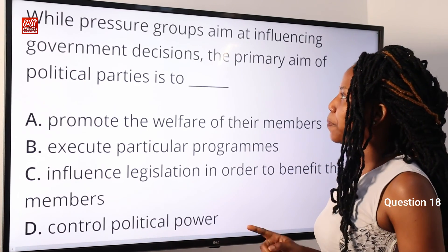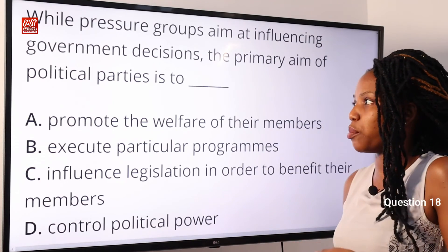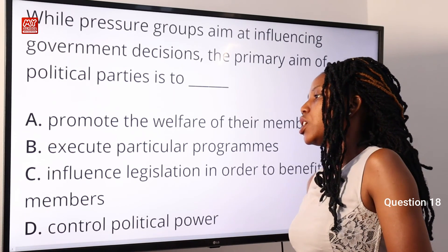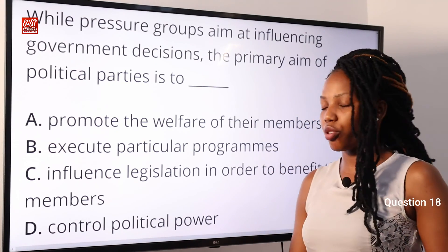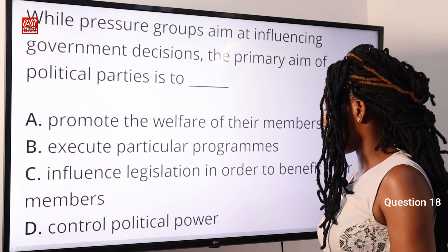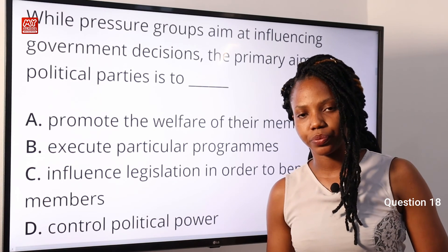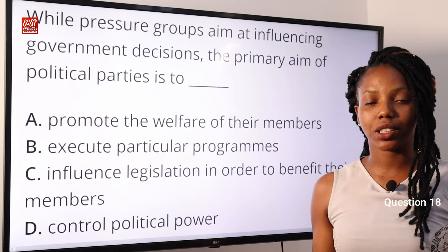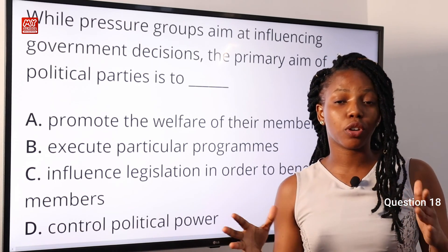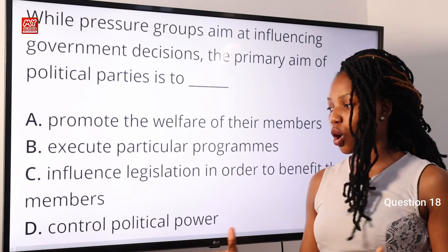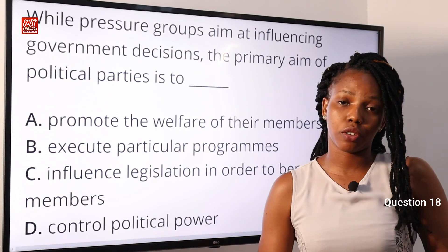Question 18: While a pressure group aims at influencing government decisions, the primary aim of political parties is to — A: promote the welfare of their members; B: execute particular programs; C: influence legislation to benefit their members; D: control political power. A political party is an organized group of people forming a political unit seeking control of the government, which implies controlling political power. Option D is the correct answer.